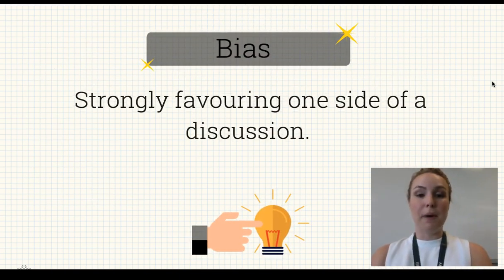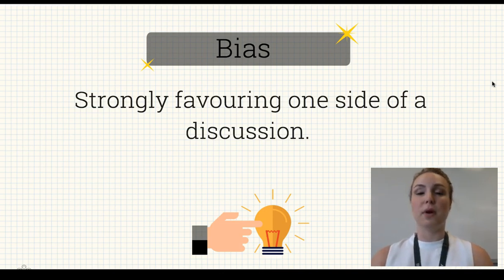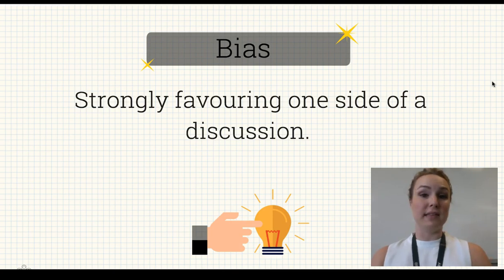So, bias. This is when only one side of a discussion or an issue is presented. This can be in terms of primary or secondary resources. It can be in things like media articles. It can also be found in biased data from something like a survey or a piece of research.